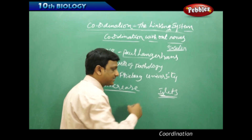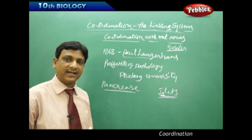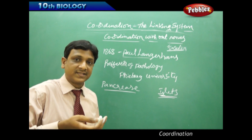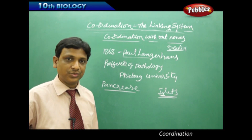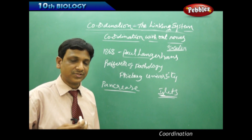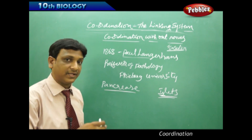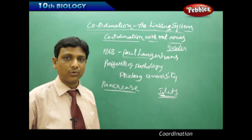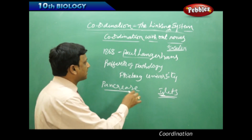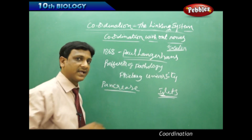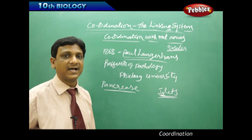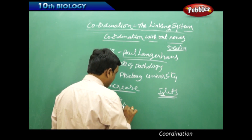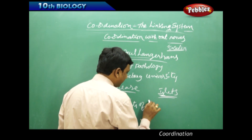An islet is nothing but an island. Those cells were floating like islands — they were not like the other tissue producing pancreatic juice. These cells were different; they were not producing digestive juice and appeared to have a separate function, though what that function was remained unknown. He called those cells the islets of Langerhans.